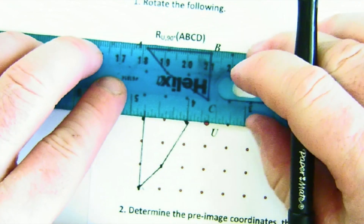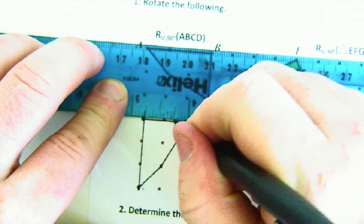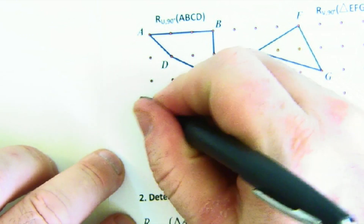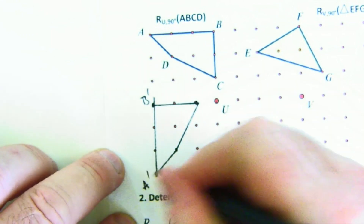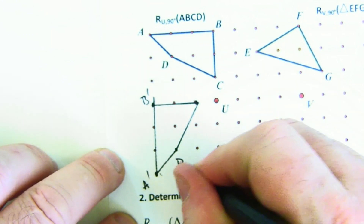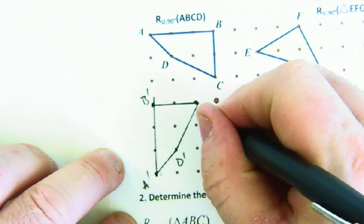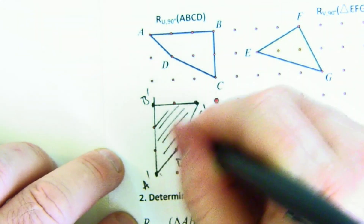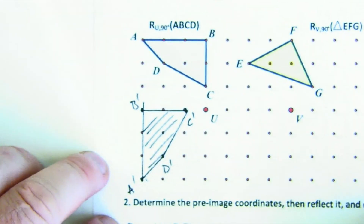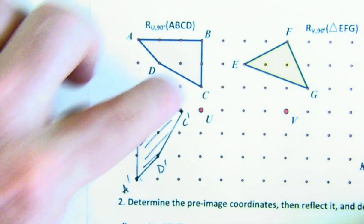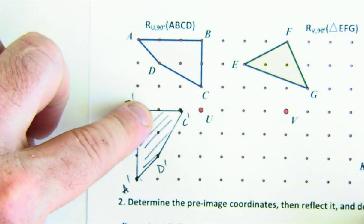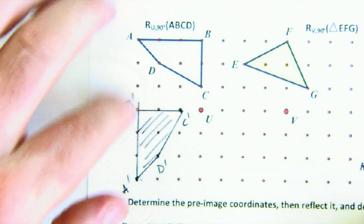I can label the resultant shape correctly: B prime, A prime, D prime, C prime. That is the resultant shape after a 90-degree counterclockwise rotation.